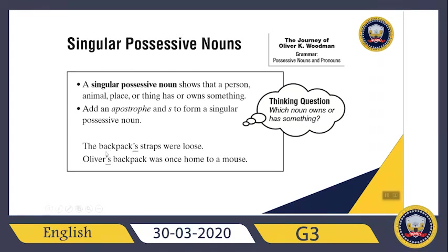Let's check the others. Oliver's backpack was once home to a mouse. This backpack belongs to who? Oliver. So after Oliver, I can add an apostrophe then 's'.